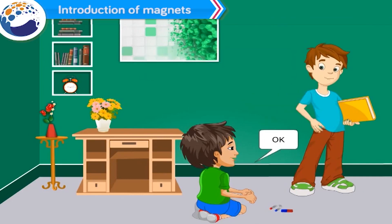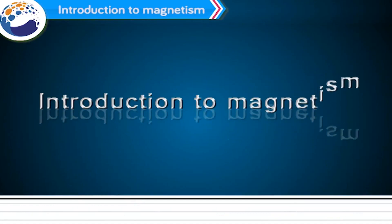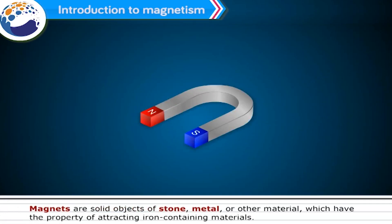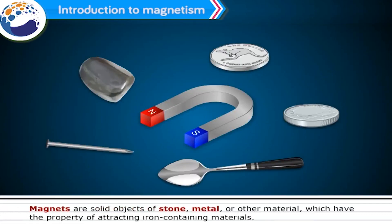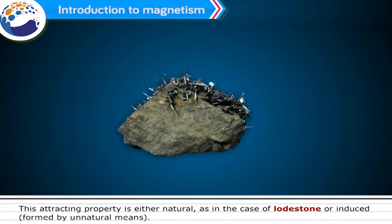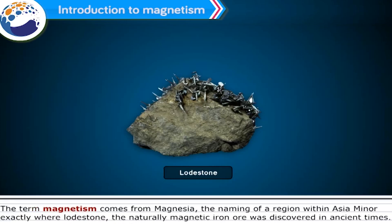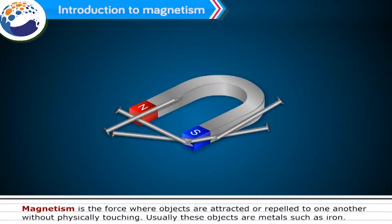Introduction to magnetism. Magnets are solid objects of stone, metal, or other material which have the property of attracting iron-containing materials. This attracting property is either natural, as in the case of lodestone, or induced, formed by unnatural means. Magnetism. The term magnetism comes from Magnesia, the naming of a region within Asia Minor, exactly where lodestone, the naturally magnetic iron ore, was discovered in ancient times.